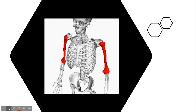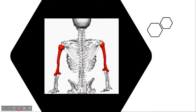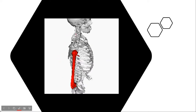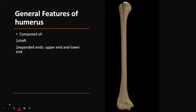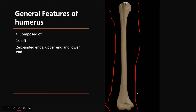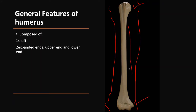The humerus is a typical long bone. It has a medullary cavity, compact bone, and spongy bone. As a typical long bone, it has an upper end, a lower end, and a shaft. We will study the features of each: the upper end, the lower end, and the shaft.